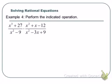To continue our lesson from yesterday, let's simplify this expression: x cubed plus 27 over x squared minus 9, times x squared plus x minus 12 over x squared minus 3x plus 9. We're going to simplify the expression and state the excluded values at the end.